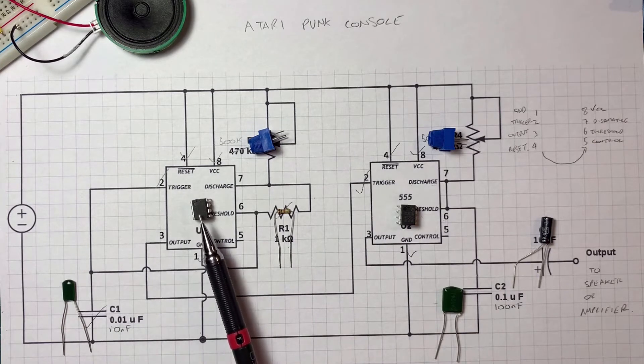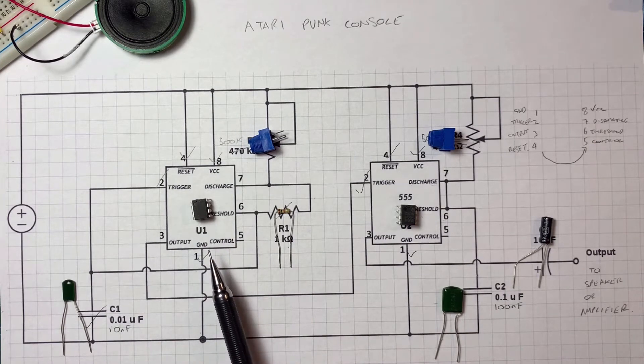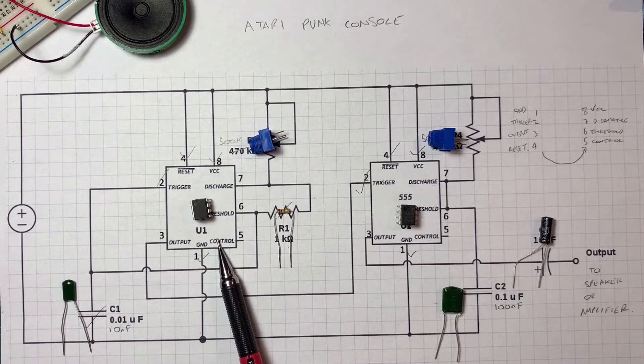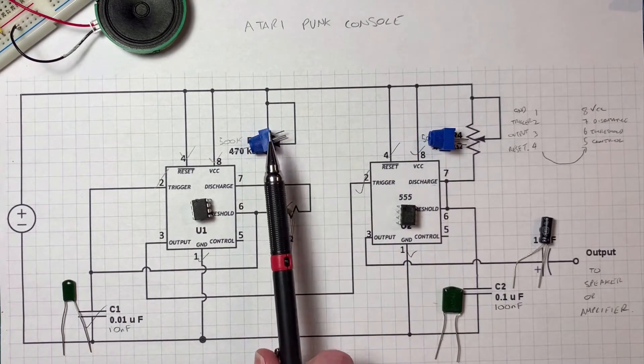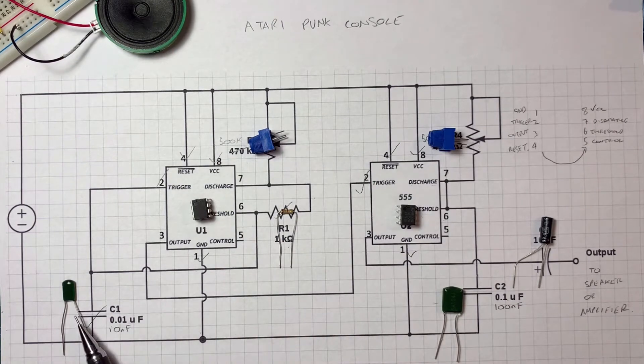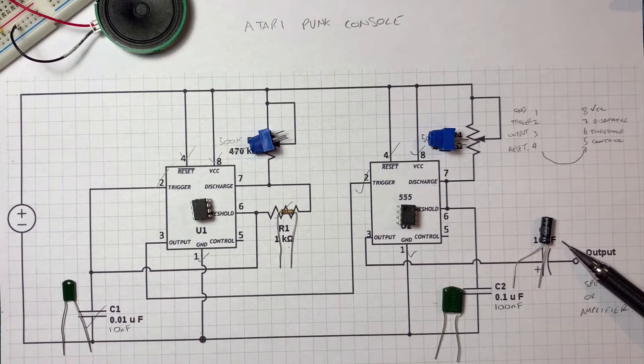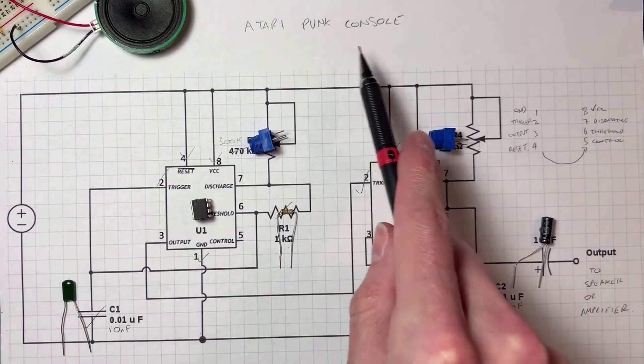So you'll see here I've got an NE555 timer IC on its schematic symbol, and the same here. Two potentiometers, I've got a resistor here, two non-polarized capacitors and my polarized capacitor at the end, so I know I've got all the bits that are required to build this Atari Punk Console.